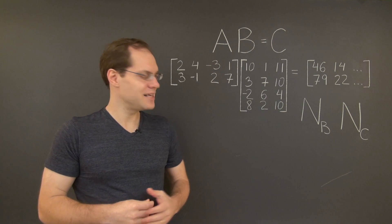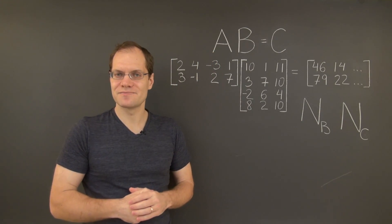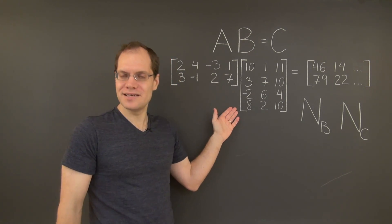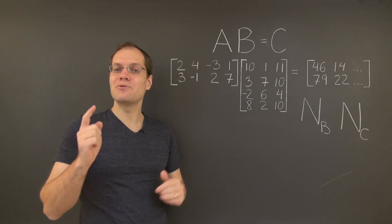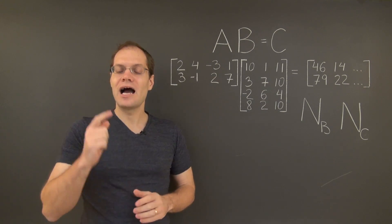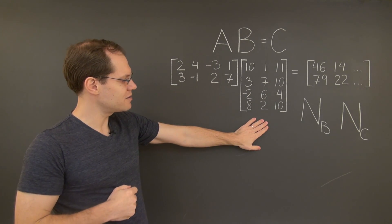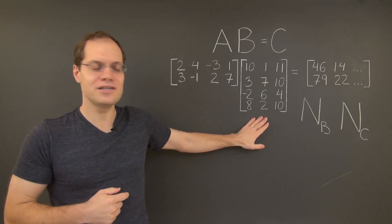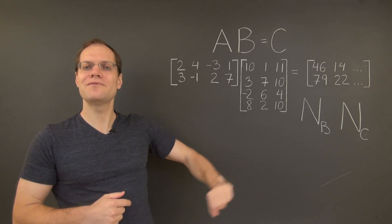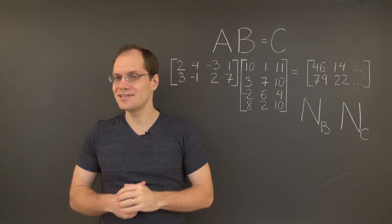But what is the precise nature of the relationship between these two spaces? In order to answer that question, I invite you to complete this matrix product. But I want you to do it in a very peculiar way — I want you to realize that you can complete this product by referring only to the entries of the matrix B. You don't even need to look at the matrix A. Do you see why that is?